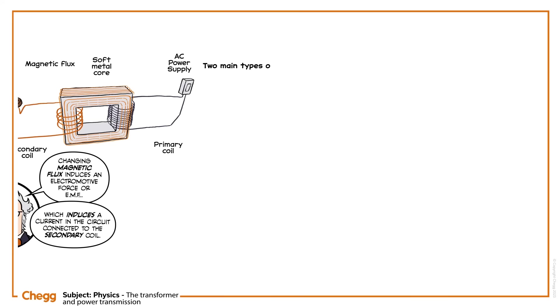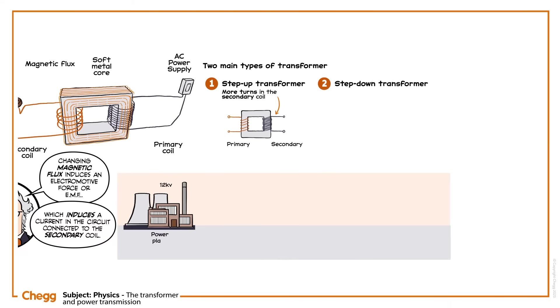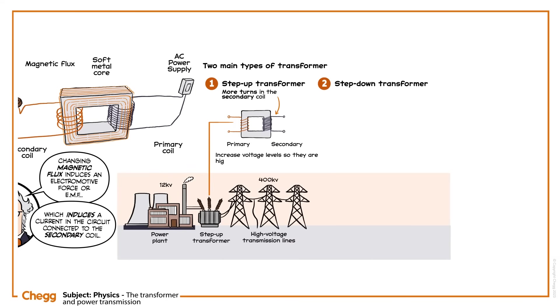There are two main types of transformers, step-up and step-down. This one is a step-up transformer, and we can tell because there are more turns in the secondary coil than in the primary. Power plants use step-up transformers to increase voltage levels, so they're high enough to travel efficiently with minimal heat loss.